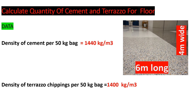The floor we are going to calculate the quantity of cement and terrazzo for is six meters long and four meters wide, with a terrazzo thickness of 12 millimeters. We've been given the density of cement as 1440 kg per cubic meter per 50 kg bag, and the density of terrazzo chippings as 1000 kg per cubic meter per 50 kg bag. Now that we have the area, thickness, and densities, let's proceed to calculating the quantities.